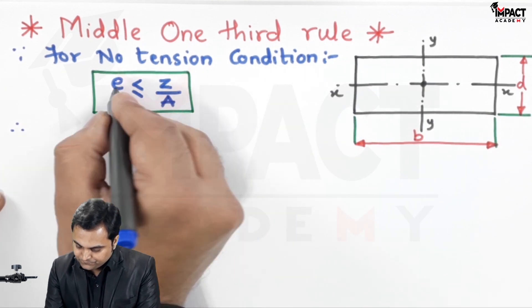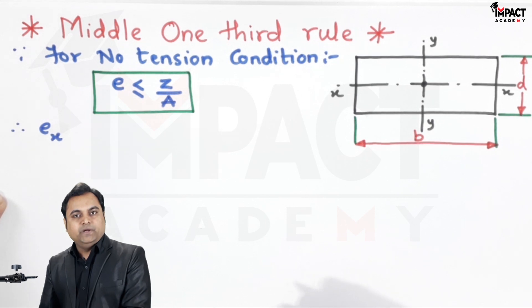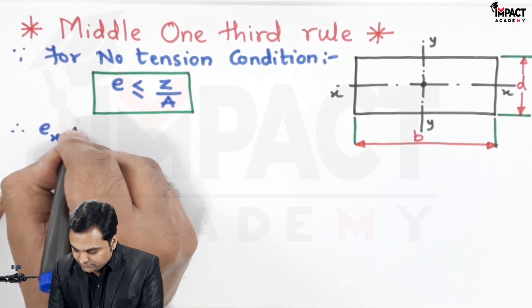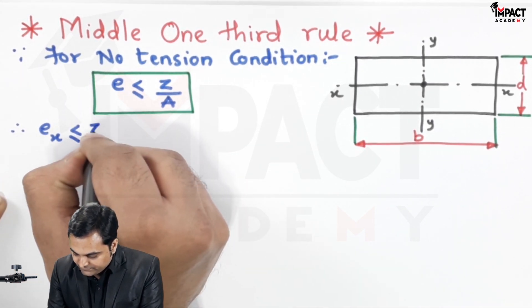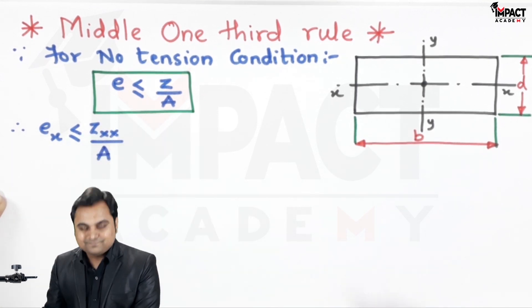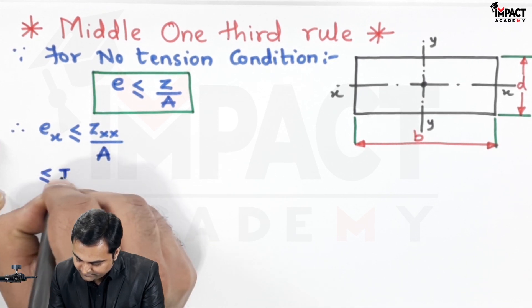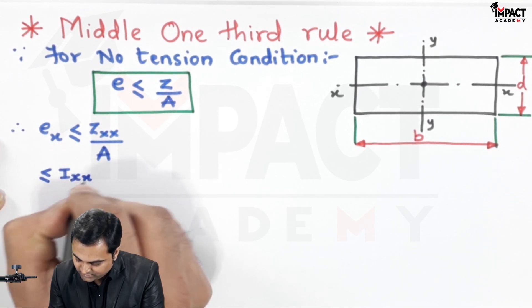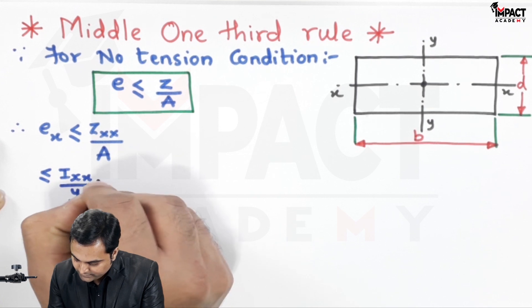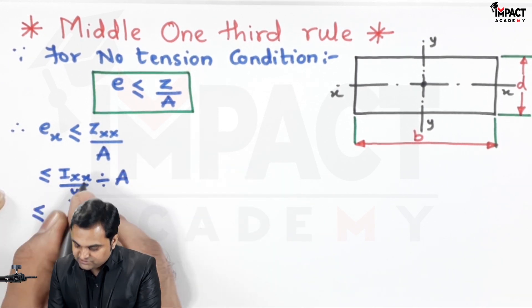I would be finding e_x, that is the eccentricity with respect to x-axis, and that would be Z_xx upon area. So here Z_xx is I_xx upon y divided by area.